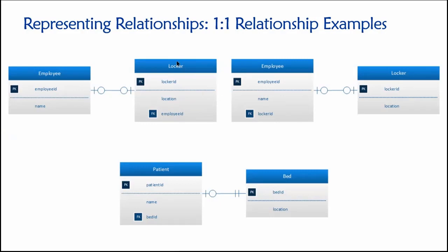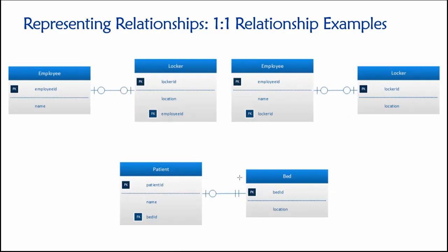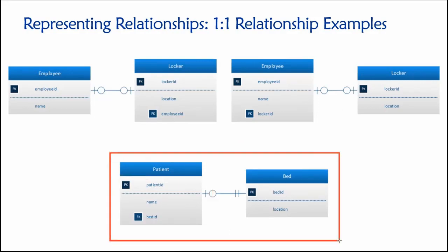This choice is only available in one-to-one relationships where the minimum cardinality is zero — that is, the relationship is optional on both sides. However, if you have a situation like tracking patients and beds in a hospital, things are different. Not all patients need a bed — for instance, an ER visit for stitches wouldn't require an overnight stay.